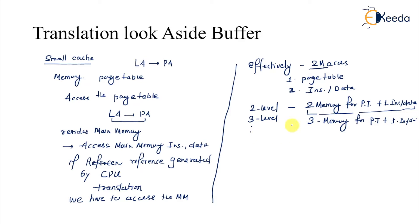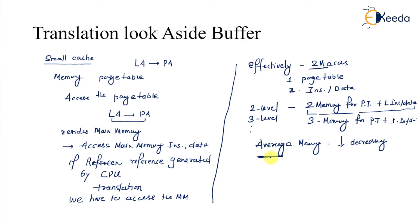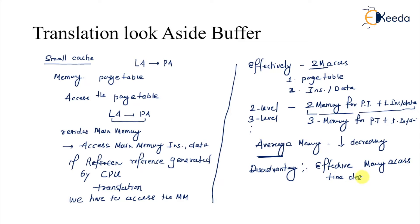That is not a very good situation, because our average memory access time will keep on increasing. The whole idea was to maintain non-contiguous memory allocation using pages, and certainly to maintain that, we are getting these disadvantages. The effective memory access time decreases — that's certainly not a good situation.